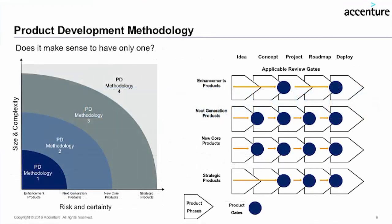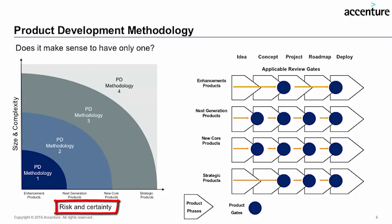Something I often get asked is should a company have just one product development methodology? The answer is most likely not. If you look at a chart with two dimensions — the vertical being size and complexity, and the horizontal being risk and certainty — you have to consider: is it a small simple product with a few parts, or something like a space shuttle or semiconductor chip? And is it a product you know how to design, or one that pushes the boundaries of engineering where you need to mitigate and manage risk as you design?